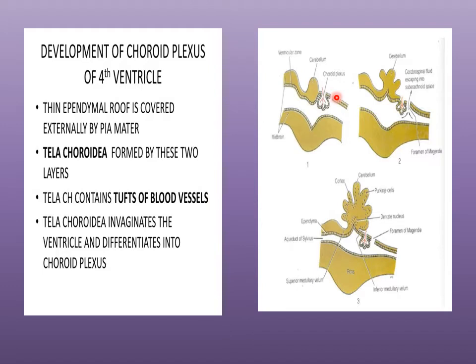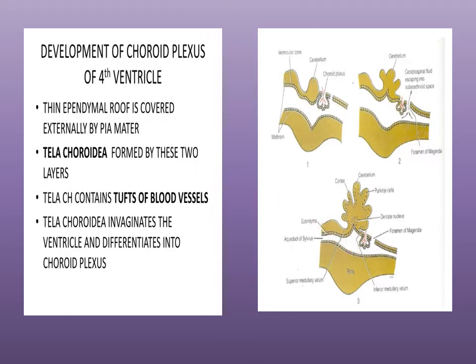The ependymal roof is covered externally by the pia mater, and together they form the tela choroidea — the sheet of pia mater covering the lower part of the fourth ventricle. Due to active proliferation of the pia mater, the tela choroidea invaginates the fourth ventricle and differentiates into the choroid plexus through infoldings of the choroidal arteries. Similarly, choroid plexuses form in the lateral ventricle and third ventricle walls. The choroid plexus secretes ventricular fluid that becomes the CSF, supplemented by contributions from the brain surfaces, spinal cord, and pia-arachnoid layers. Various signaling morphogens found in the CSF and choroid plexus are necessary for brain development.